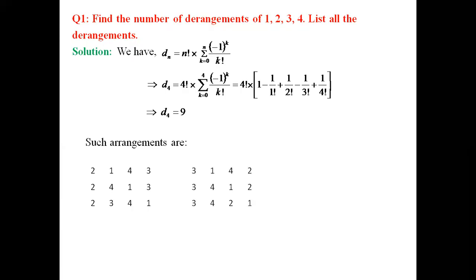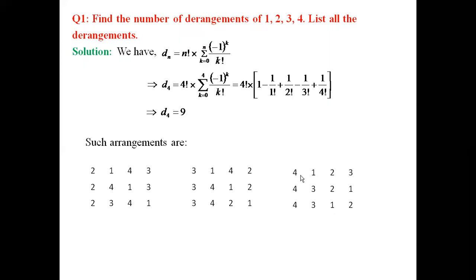Similarly, starting with the number 3, the arrangements are: (3, 1, 4, 2), (3, 4, 1, 2), and (3, 4, 2, 1). Observe that each of these numbers are not in their original place — 3 is not in the third position, 1 is not in the first position, 4 is not in the fourth position, and 2 is not in the second position. These are 3 more arrangements starting with 3. Similarly, arrangements starting with 4 are: (4, 1, 2, 3), (4, 3, 2, 1), and (4, 3, 1, 2). Of course, we should not have any arrangement starting with 1, as that would not satisfy the definition of derangement. So 9 such arrangements are listed.